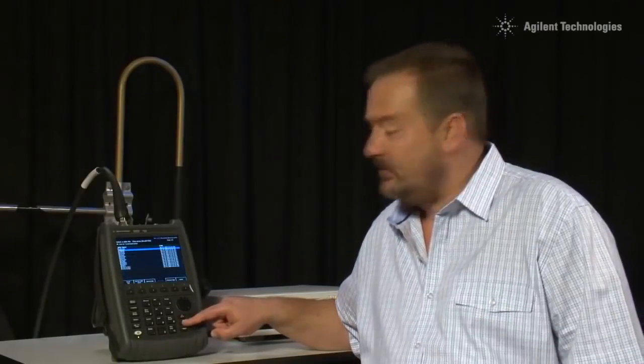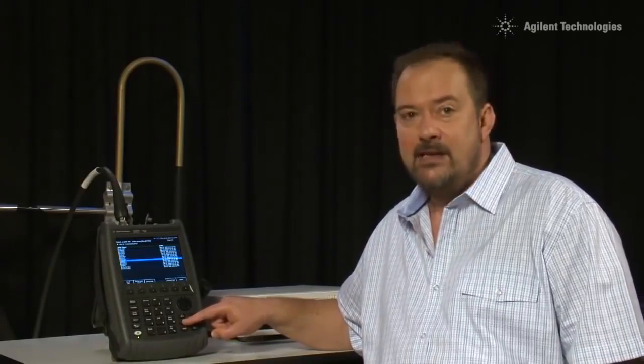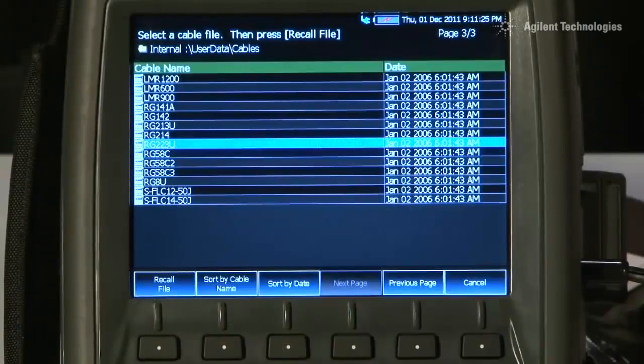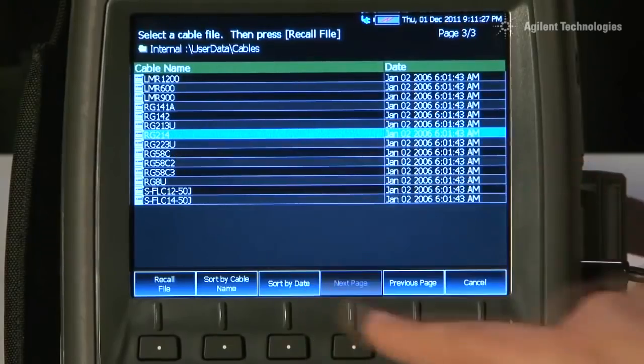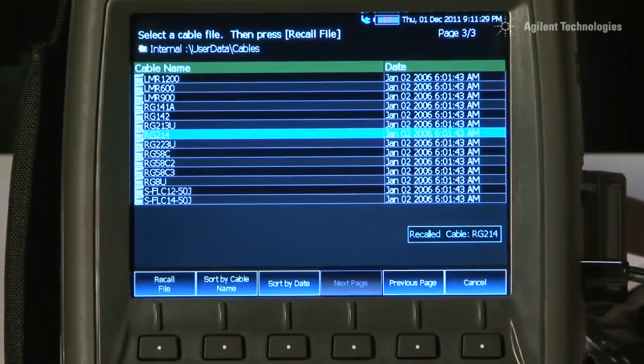And you can see here all of the common RF cables and microwave cables are already stored inside the FieldFox. If there is a cable you are using that isn't stored inside, you can simply enter the values of Velocity Factor and Attenuation yourself. Now, this is RG214 so I will select RG214 and select Recall File.